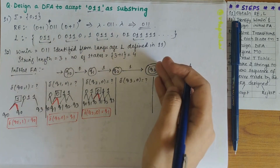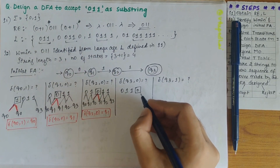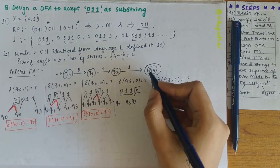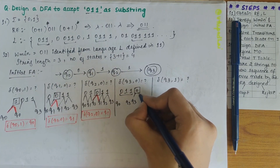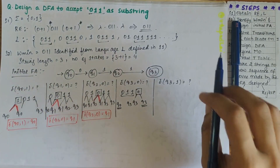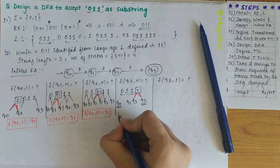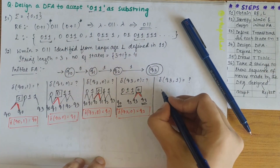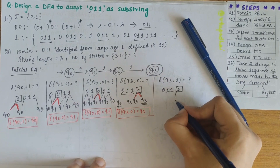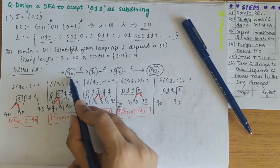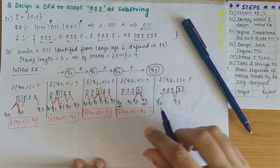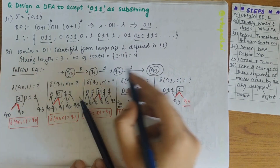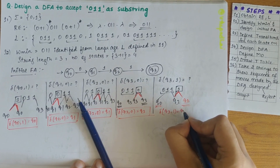For Q3 on 0: before Q3 we have 011, followed by 0. Since 011 starts at Q0 and ends at Q3, the transition of Q3 on 0 gives Q3 itself — that's when the initial state and final state would be justified. For Q3 on 1: before Q3 we have 011, followed by 1. The only possible transition is Q3 on 1 gives Q3 itself, so Q0 remains the start state and Q3 remains the final state.